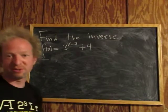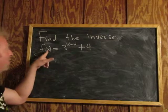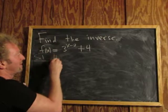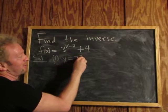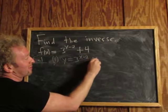So to find the inverse, the first thing you do—it's a step-by-step process—is call this y. Step 1, I like to number my steps: y equals 3 to the x minus 2 plus 4. Step 1, call it y.